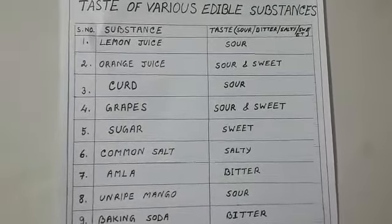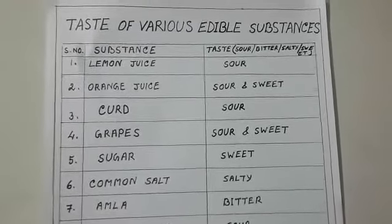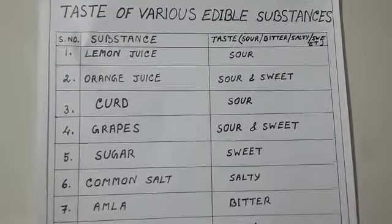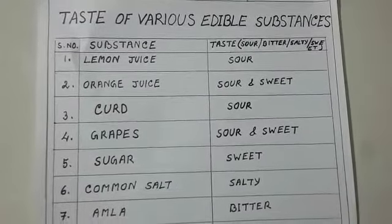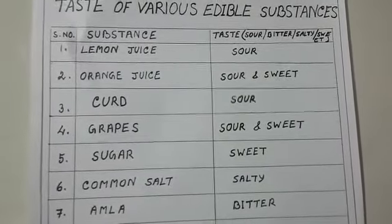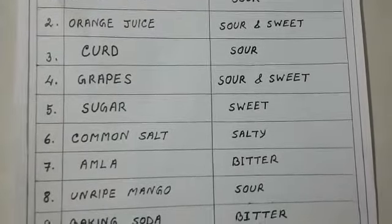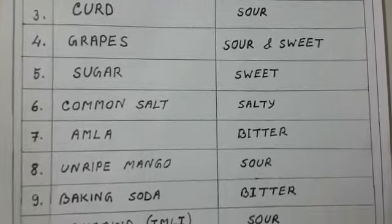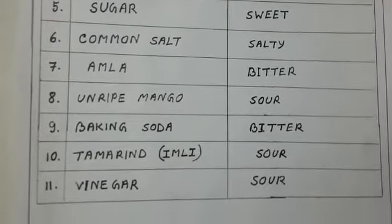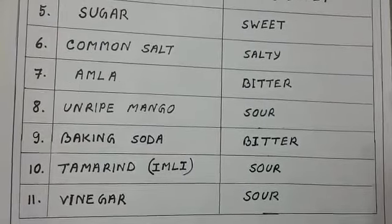Let us recall the taste of a few edible substances given in the table. Lemon juice — sour. Orange juice — sour and sweet. Curd — sour. Grapes — sour and sweet. Sugar — sweet. Common salt — salty. Amla — bitter. Unripe mango — sour. Baking soda — bitter. Tamarind — sour. Vinegar — sour.